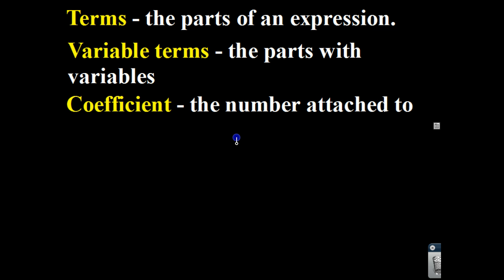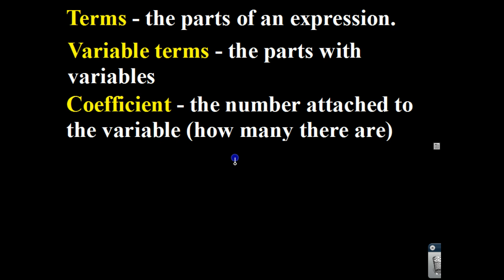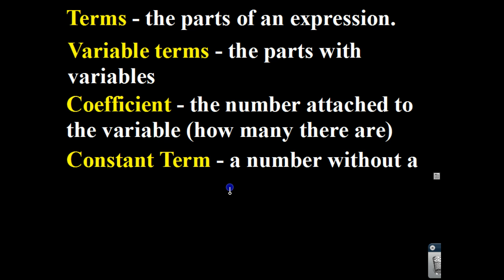Then we have a coefficient. This is the number attached to the variable, also known as how many there are — the number that you multiply a variable by. Then we have a constant term. This is a number without a variable. A constant term is something that doesn't change, like the number four. The number four is always going to be four — it's constantly four, it doesn't change. That's called a constant term.